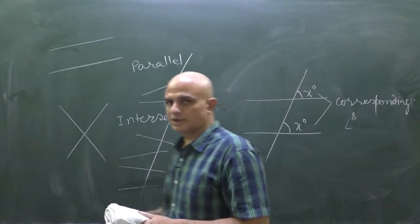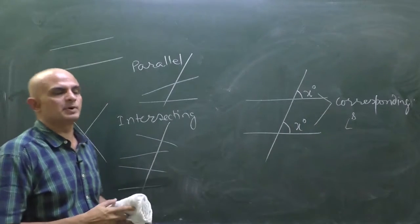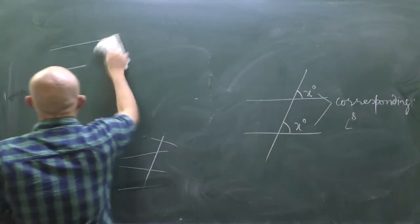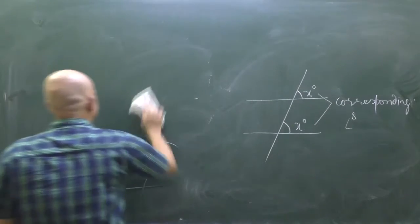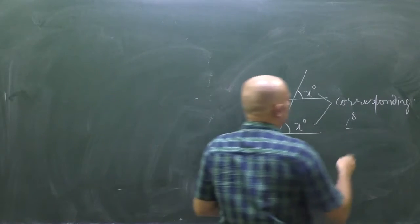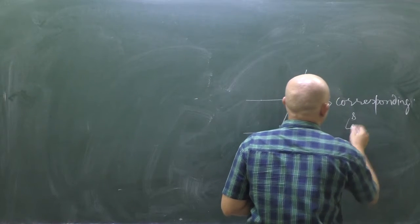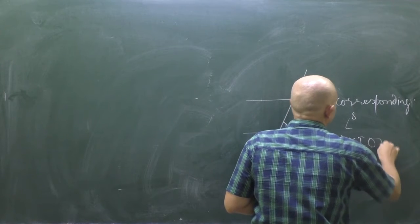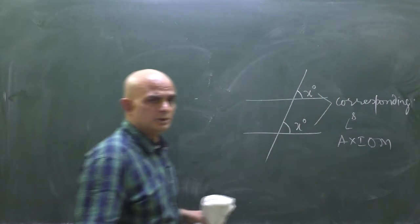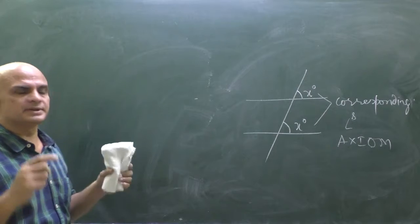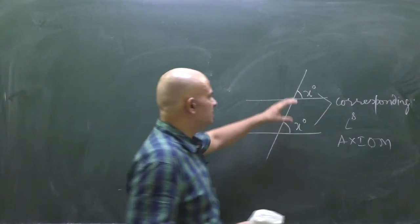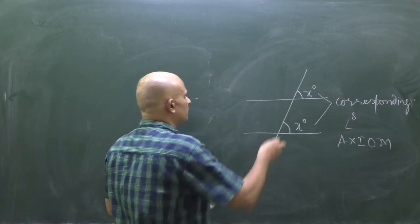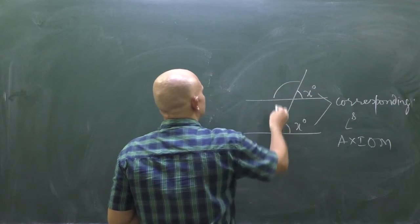These two equal angles are called corresponding angles, and this property is called the Corresponding Angle Axiom. Both pairs of corresponding angles are equal.